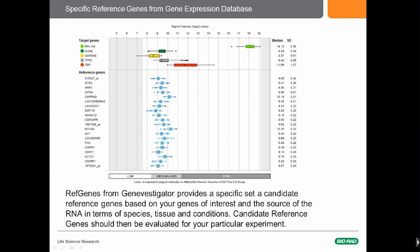Other sources of reference genes: here is a screen from the RefGenes function on the GeneVestigator site. They have a free function that allows you to put in your genes of interest and the tissues you're going to be using them in, and it selects some candidate reference genes for you. Of course, you will need to test those — that's another one of our take-home lessons: you're going to have to test them yourself.